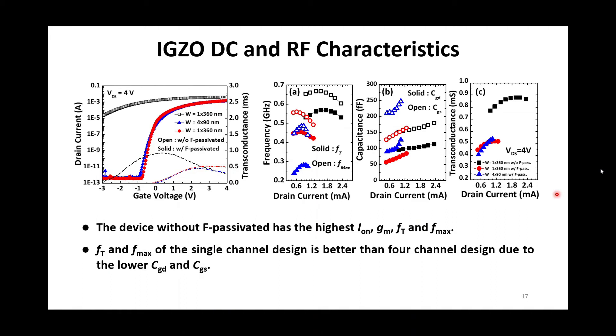On the contrary, the device with fluorine-passivation perform the excellent switch properties. Their on-off ratio are over 9 orders, and the design of a single 360-nanometer-width channel has 457 MHz cutoff frequency and 560 MHz maximum oscillation frequency, which are higher than the 4-finger channel design owing to the lower gate-to-source and drain capacitance.